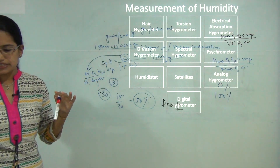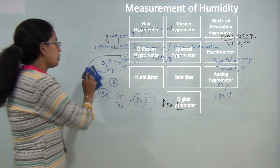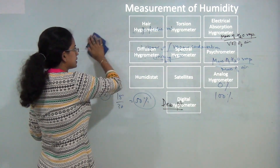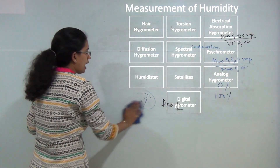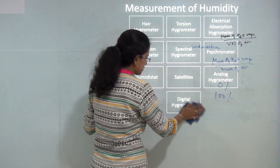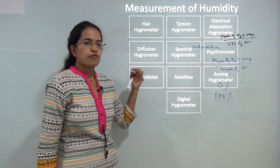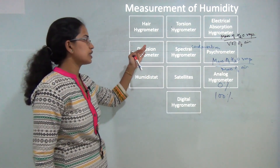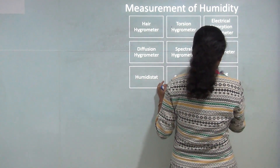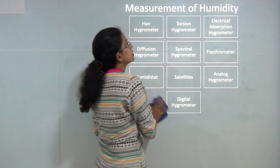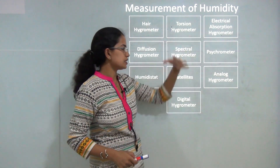Coming on to measurement of humidity — the instrument that measures humidity is known as a hygrometer, and the science or means by which we measure humidity is known as hygrometry. These are the two commonly used terms to understand humidity measurement.